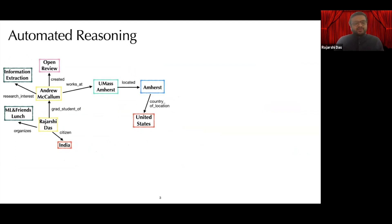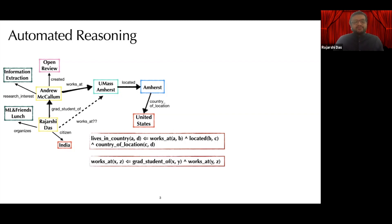Even in this toy knowledge graph, we can infer several unobserved facts. For example, we can infer that Andrew lives in the United States by doing compositional reasoning on the observed facts that he works at UMass, which is located in Amherst, which is located in the US, or the fact that I work at UMass because I'm a graduate student working with Andrew who works at UMass.